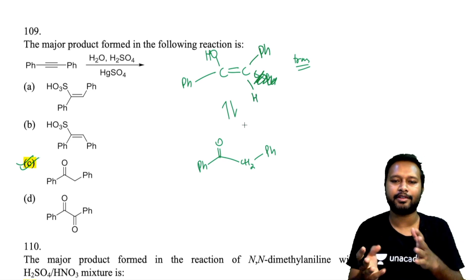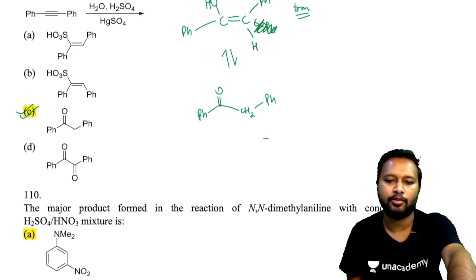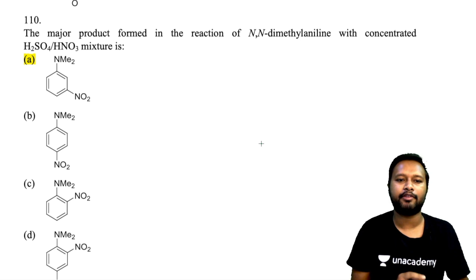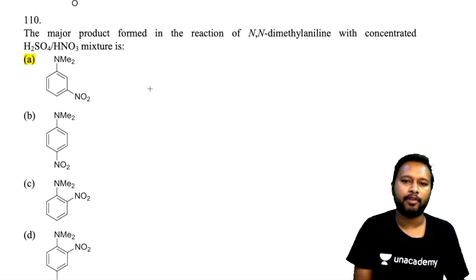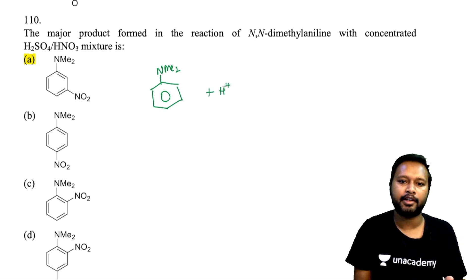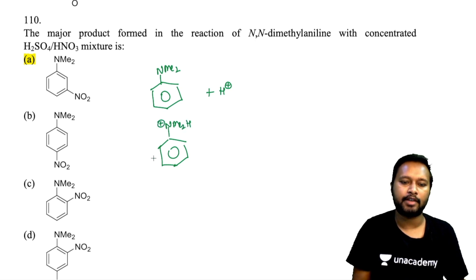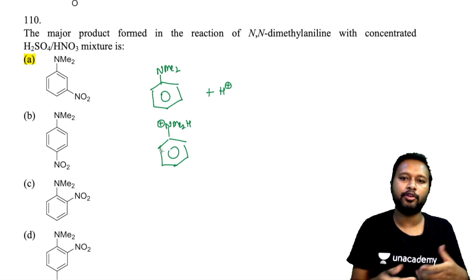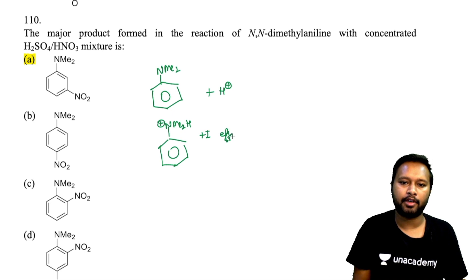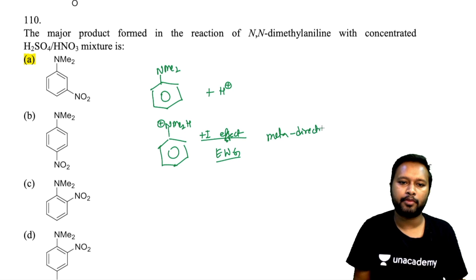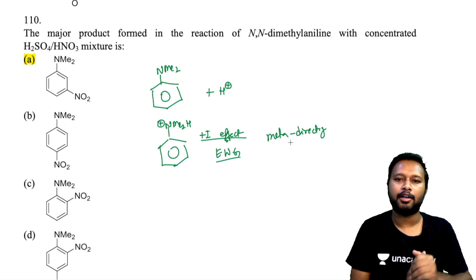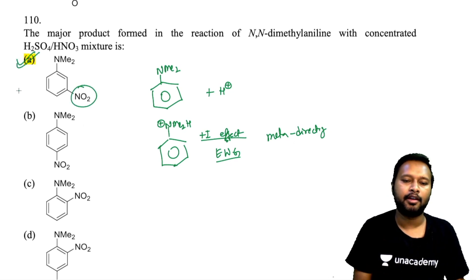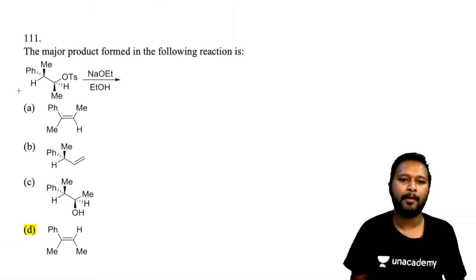Question 110: major product from N,N-dimethylaniline reacting with concentrated H₂SO₄/HNO₃. Under acidic conditions, the nitrogen is protonated to give –N⁺Me₂H. This protonated group is electron-withdrawing (+I effect makes it meta-directing). The nitro group therefore enters at the meta position. Meta-substituted product is the major product.